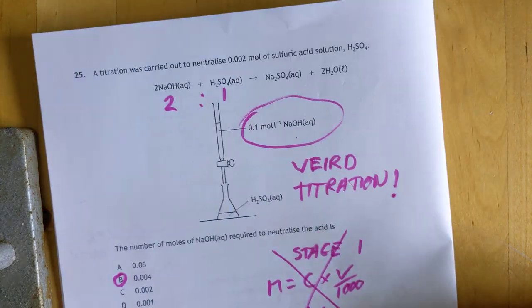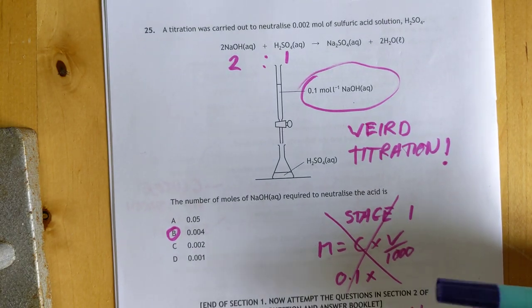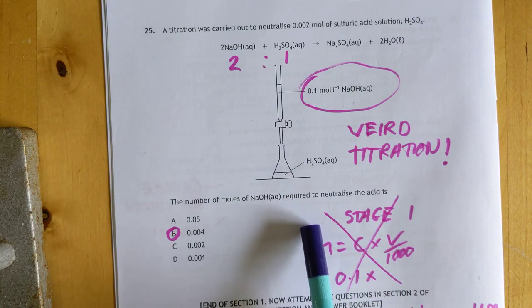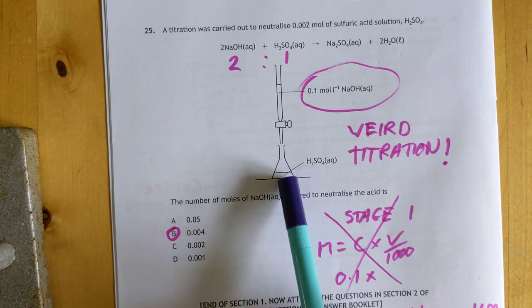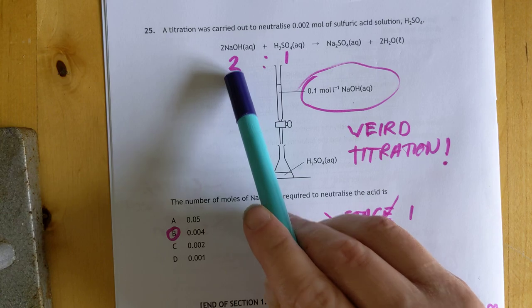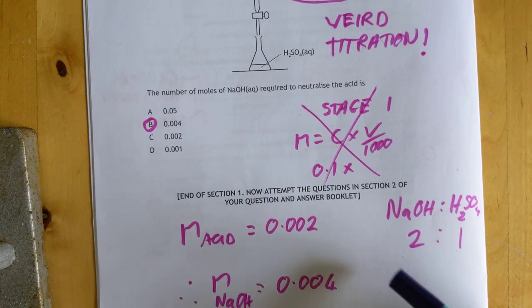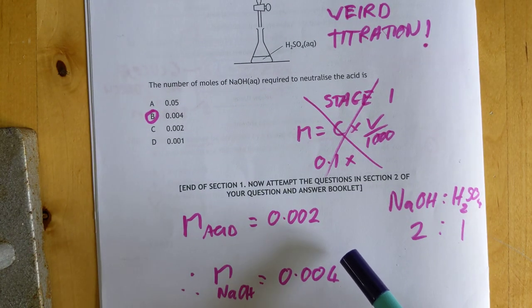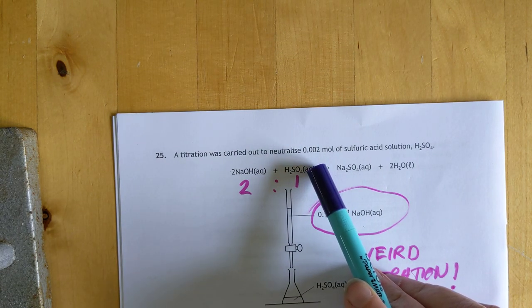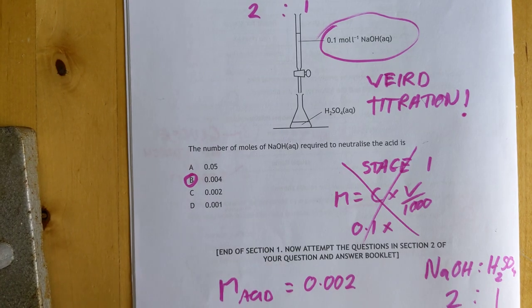A weird titration. What a weird titration. They're actually asking you to figure out the number of moles of sodium hydroxide. They tell you the number of moles of acid in the bottom beaker. You need to use the fact that it's a two to one ratio. If you know the moles of sulfuric acid, multiply it by two. They tell you 0.002, so double that you get 0.04. What an odd titration question.